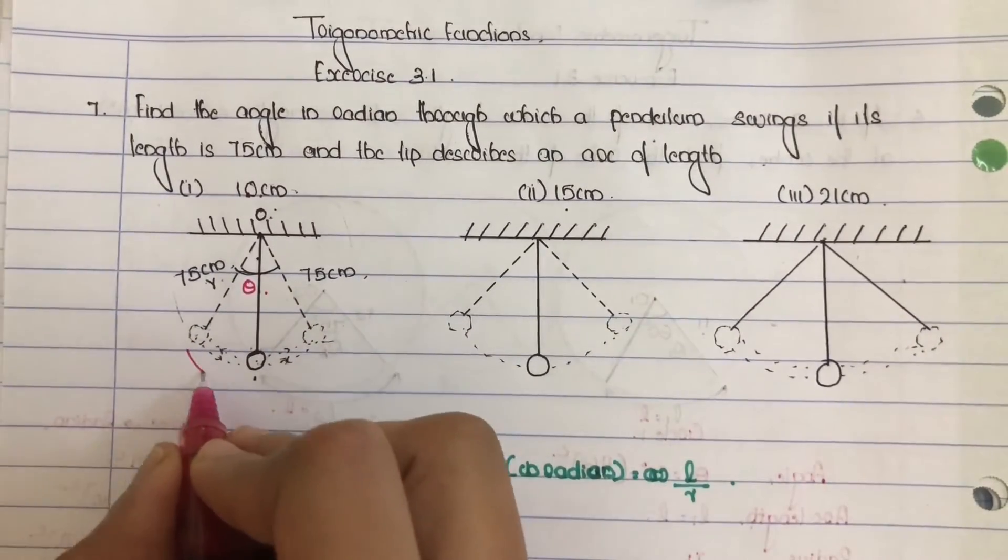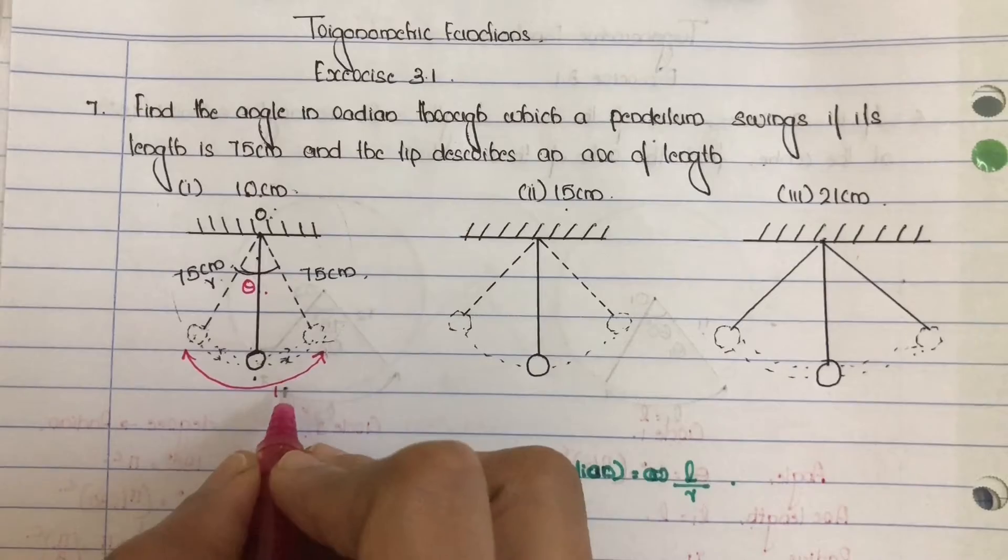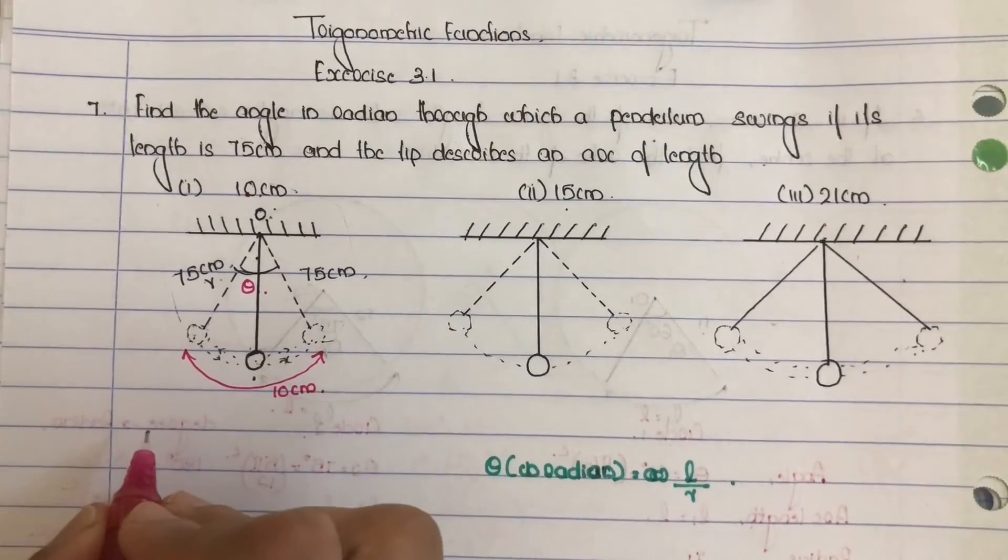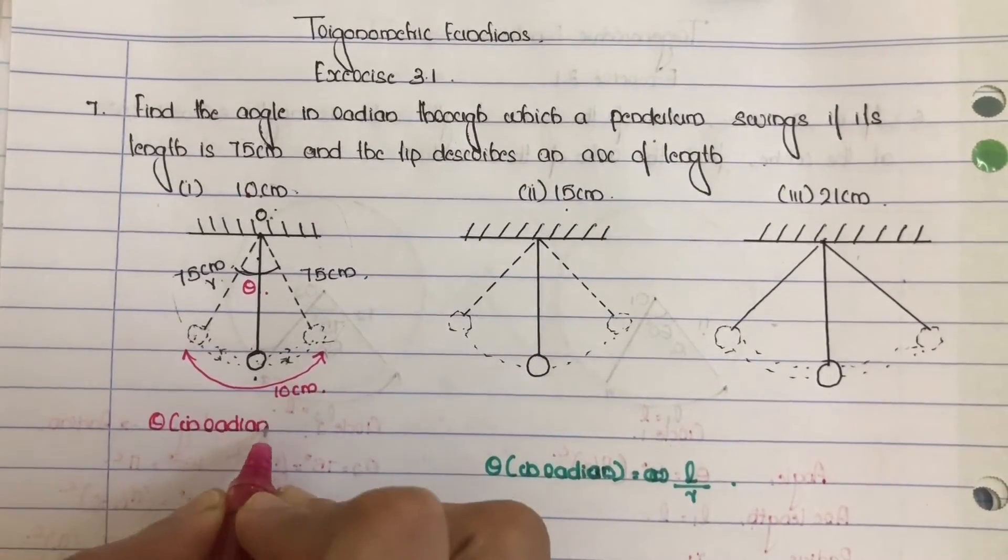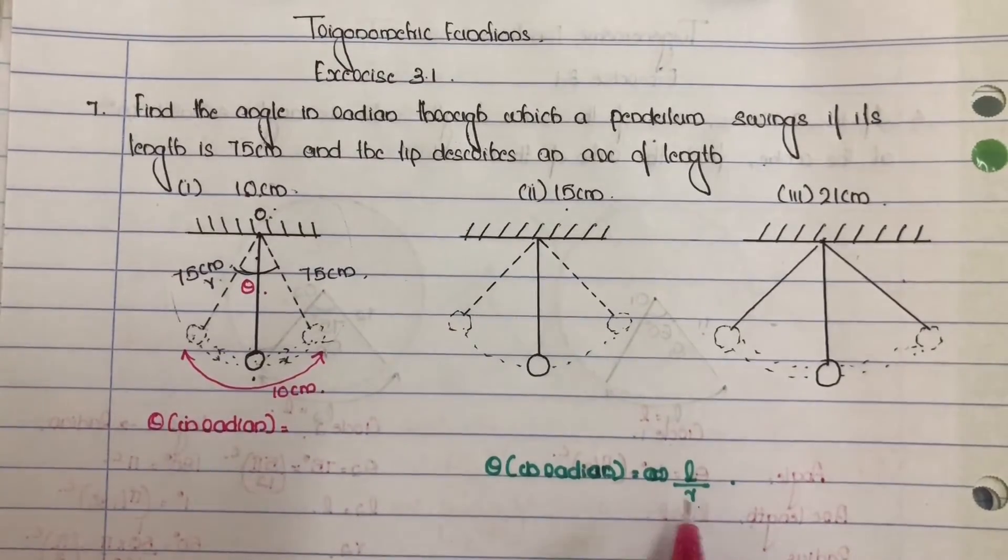Assume theta. Here we have arc length 10 centimeter, so theta in radian, equation substitute here. Theta in radian is equal to L by R, length of the arc is 10 divided by radius of the circle is 75.